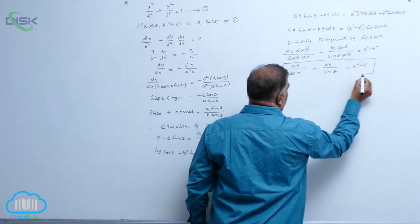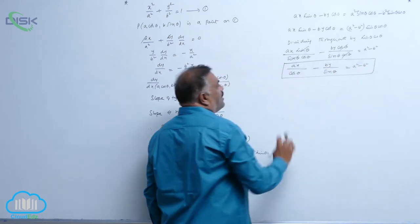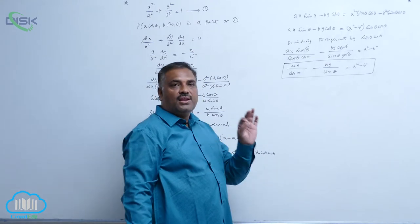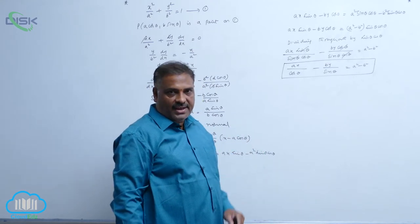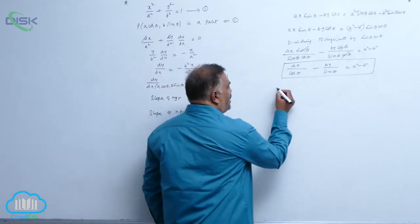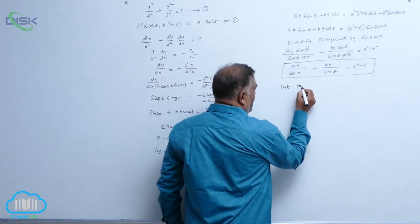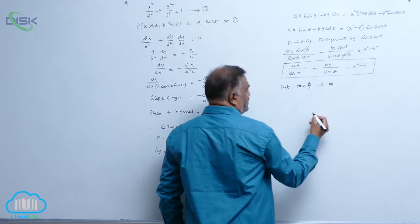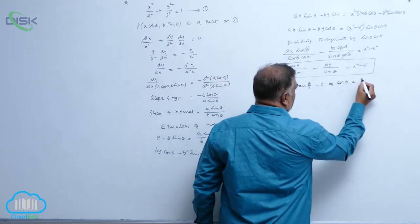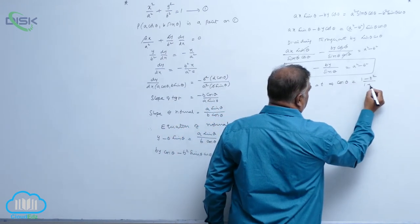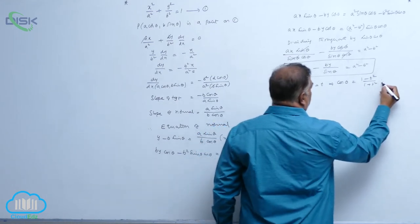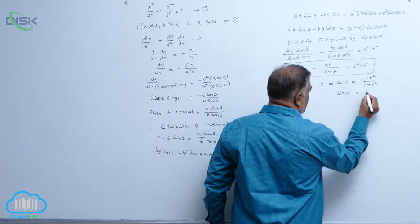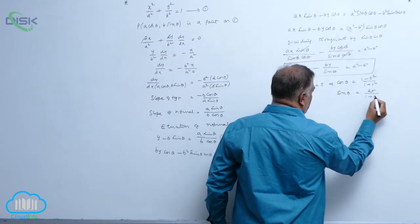This is our normal equation at any point θ. Now, from indefinite integration, we know that putting tan(θ/2) equal to t implies cos θ equals (1 minus t squared) by (1 plus t squared), and sin θ equals 2t divided by (1 plus t squared).